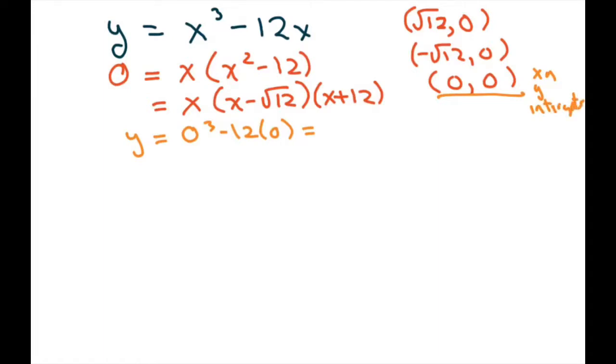And now remember, square root of 12 is 2 square root of 3. So it's probably 2 times 1.73. All right. Now let's take the first derivative.